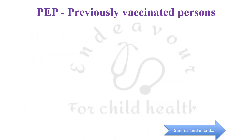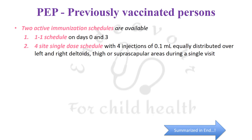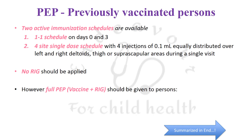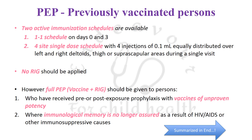For post-exposure prophylaxis in persons who have already received rabies vaccine previously, two active immunization schedules are available. The first is the one-one schedule: one vaccine dose on day zero and one on day three. The second is the four-site single-dose schedule: four injections of 0.1 ml each distributed over the left and right deltoids, thigh, and suprascapular areas during a single visit on day zero. Rabies immunoglobulin is not required in these patients. However, full post-exposure prophylaxis with both vaccine and RIG should be given to persons who received vaccines of unproven potency or where immunological memory is no longer assured, such as immunosuppressed individuals with HIV/AIDS.